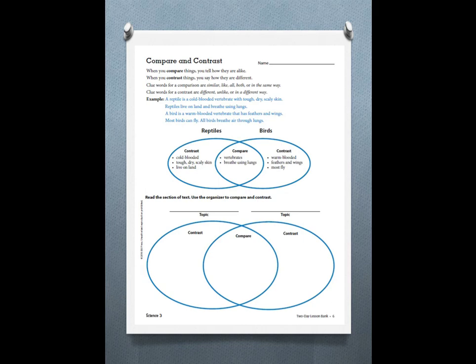When you compare things, you're going to tell me how they are alike. Remember we place things that compare or that are alike in the oval that both circles overlap and create.